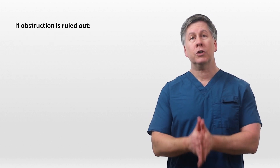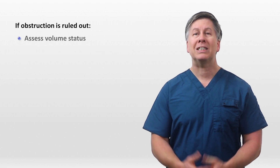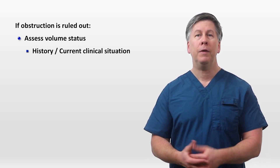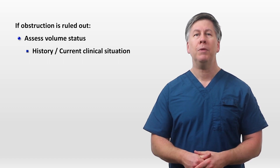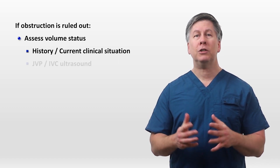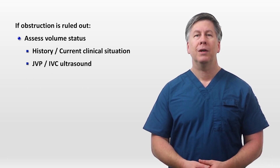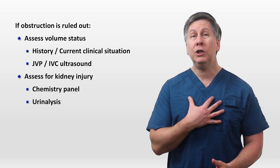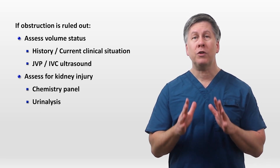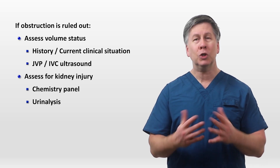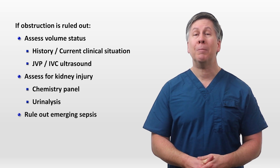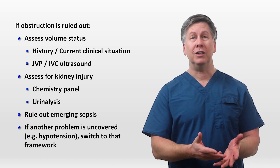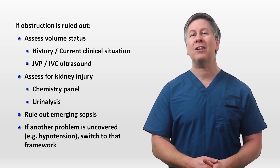If you've ruled out obstruction as the cause of low urine output, the next steps include assessing the patient's volume status — which involves consideration of the history and objective findings on exam such as the patient's JVP or the appearance of the IVC on ultrasound. Assess for other evidence of kidney injury with a chemistry panel and urinalysis. I personally don't think sending urine electrolytes just for low urine output is helpful, but you do want to rule out emerging sepsis as a cause. And if at any point you uncover another acute problem such as hypotension, switch to that framework instead, as it will likely be more urgent.